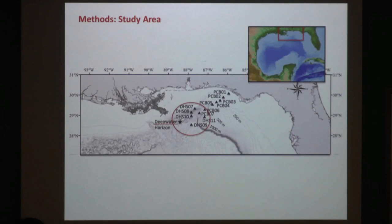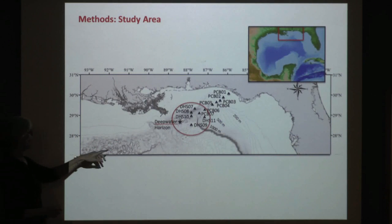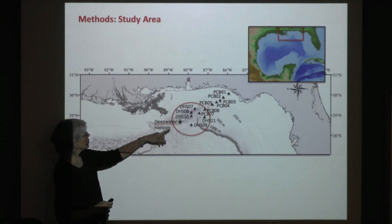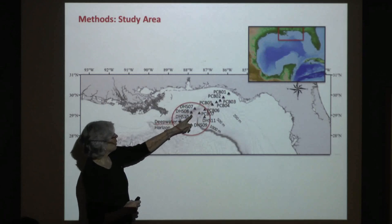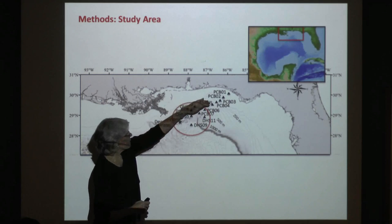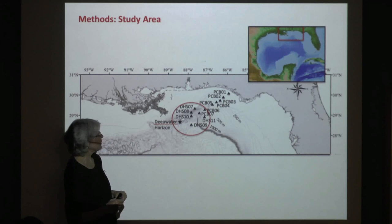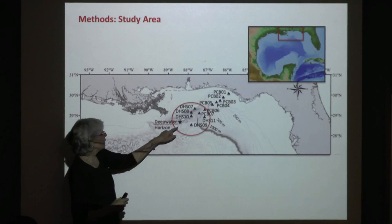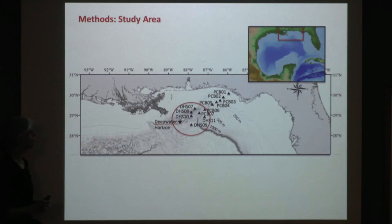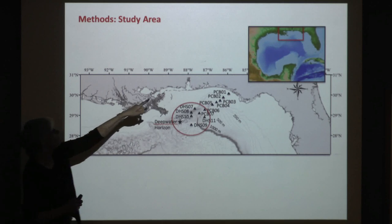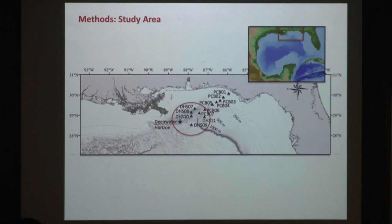This was the study area. The Deepwater Horizon site is just offshore of the Mississippi River outflow. There's what's called the DeSoto Canyon — it's a major bathymetric feature in the region. The data I'm mostly going to be showing you are these off-shelf to deep water stations. For those of you who are new to the state of Florida, the oil spill took place up in that upper corner of the Gulf of Mexico.